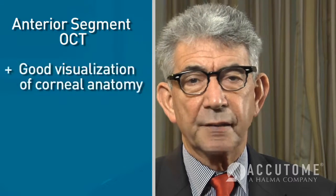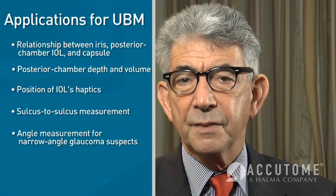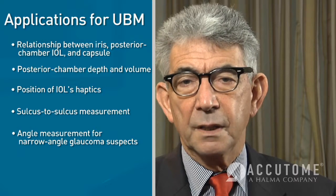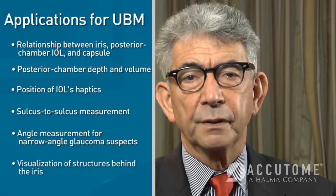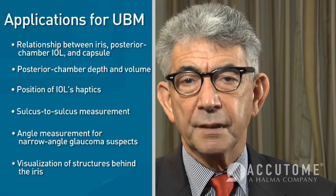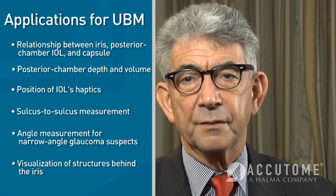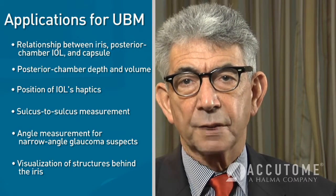The anterior segment OCT device and the UBM differ in certain ways. OCT gives very good definition of corneal anatomy and architecture. The main problem with OCT, however, is that one cannot image behind the iris. The UBM is therefore essential for posterior chamber relationships and for anywhere beyond the iris, as OCT cannot visualize behind opaque structures.